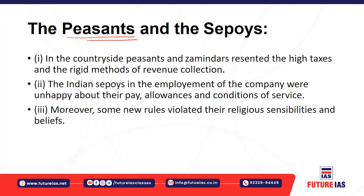First we'll look at the peasants and sepoys. As soon as the British or East India Company came, they imposed very high taxes. The method of revenue collection was exorbitant and very rigid. In the Permanent Settlement system, zamindars — or taluqdars — had to pay revenue to the company. If they were not able to pay, their land rights would be sold to another zamindar. The peasants were basically exploited, and the zamindars also lost their rights as the British sold revenue collection rights to the highest bidder.